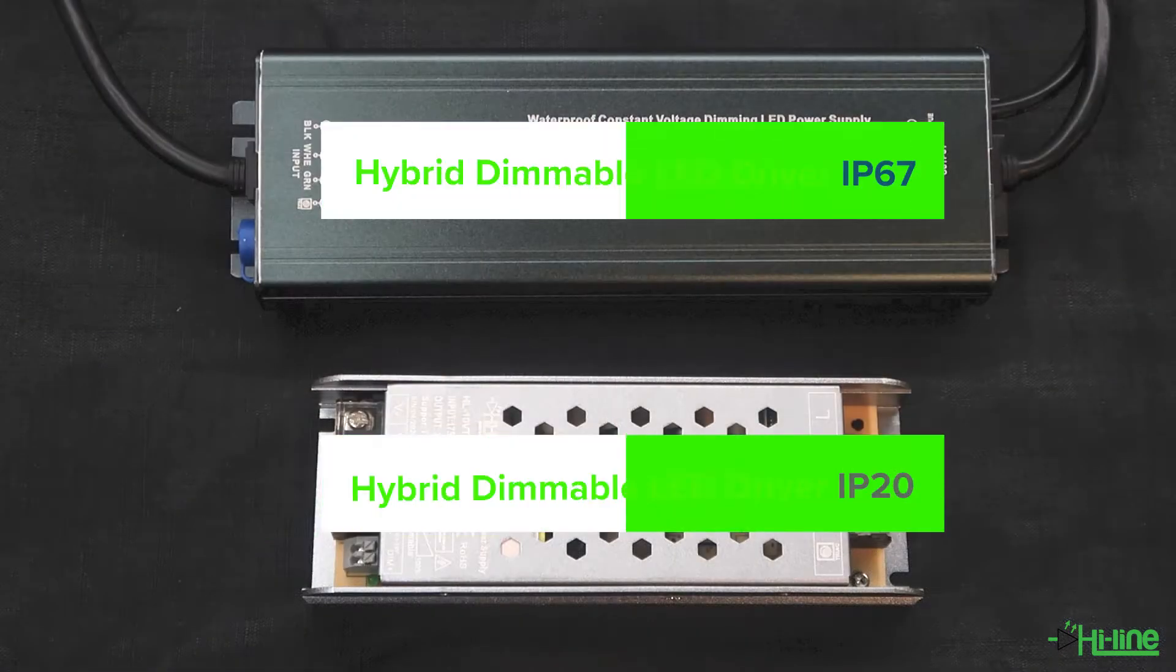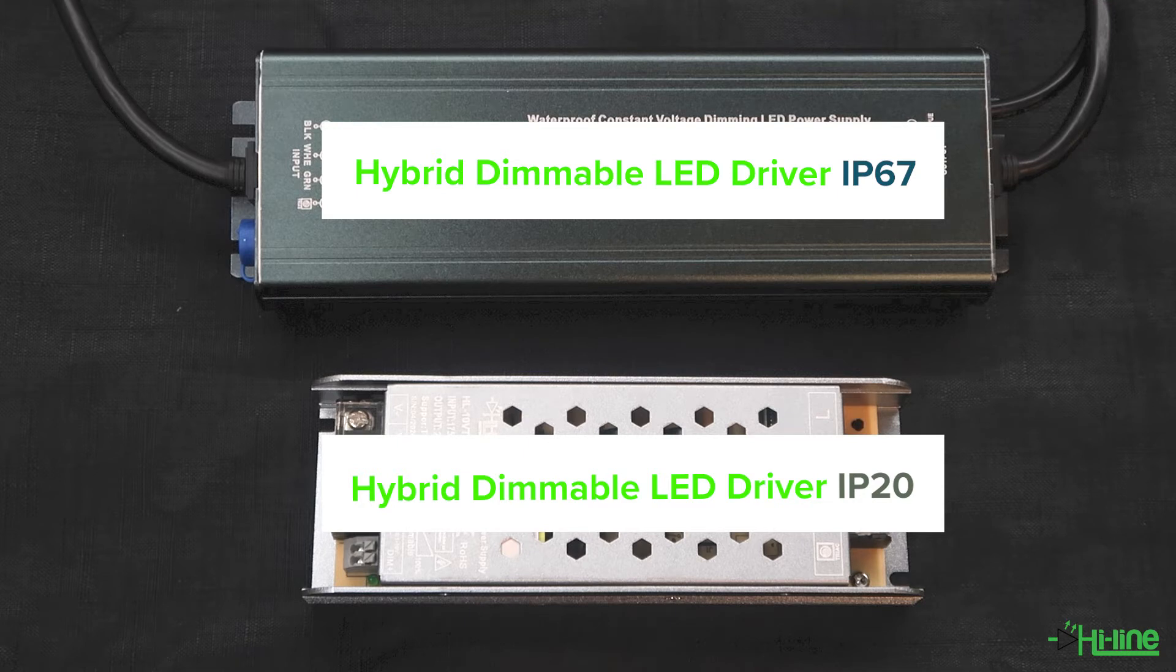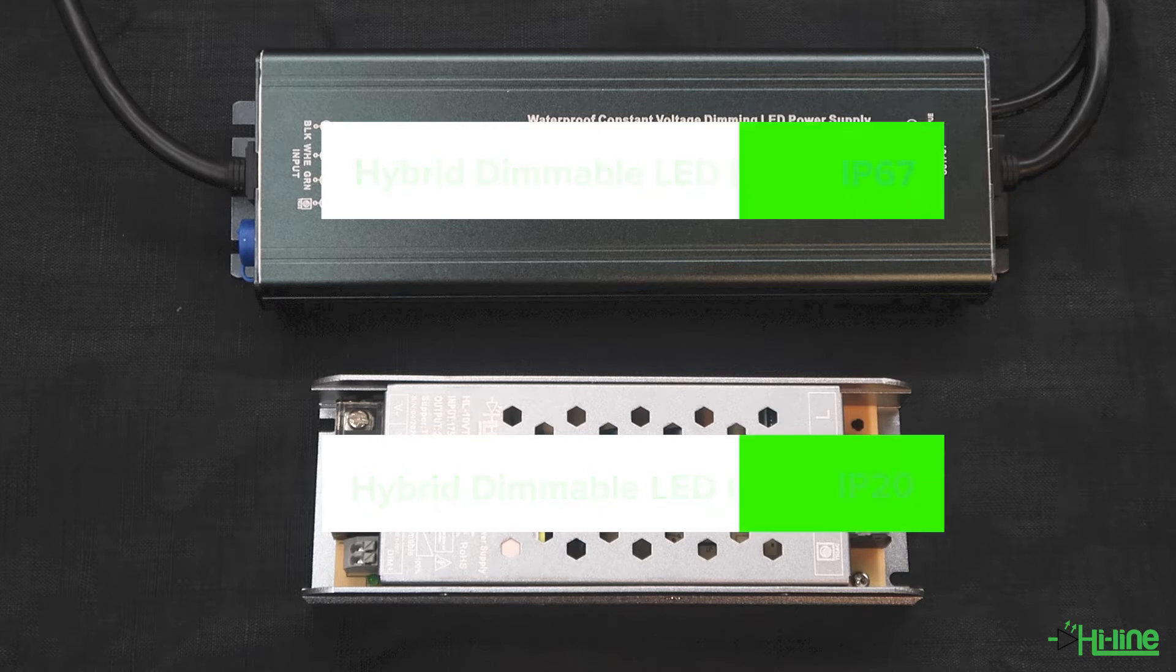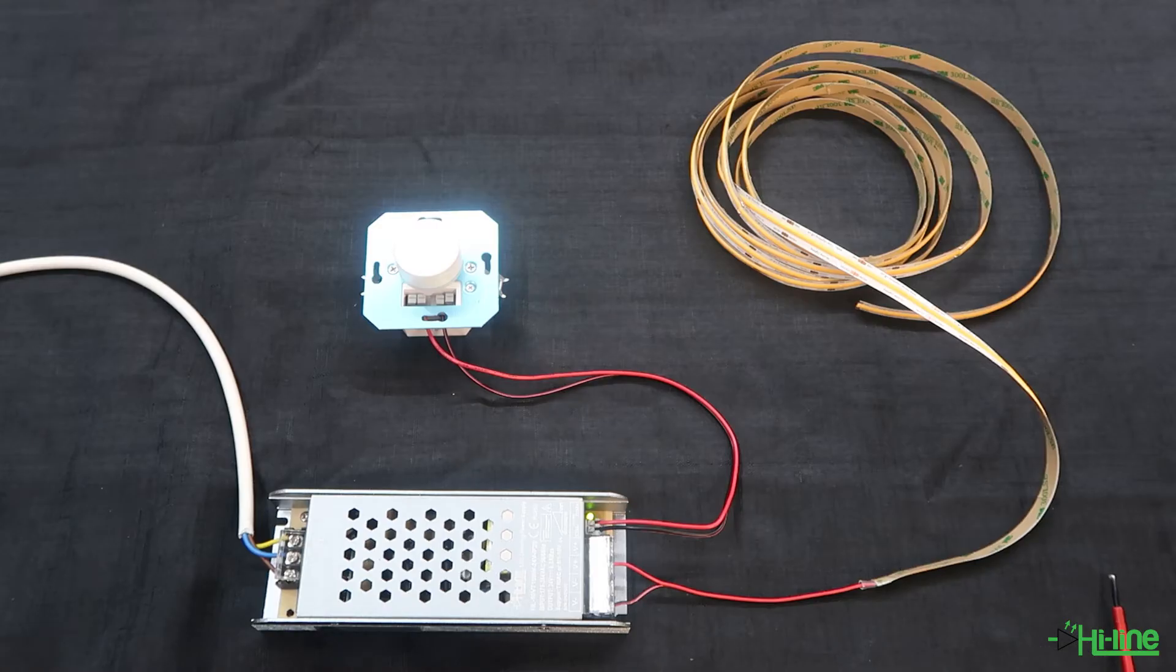These can be used with our hybrid drivers. The hybrid drivers can be used for 0-10 volt dimming as a leading edge driver or as a standard non-dimmable driver. In this case we're going to use it with our 0-10 volt dimmer switch.